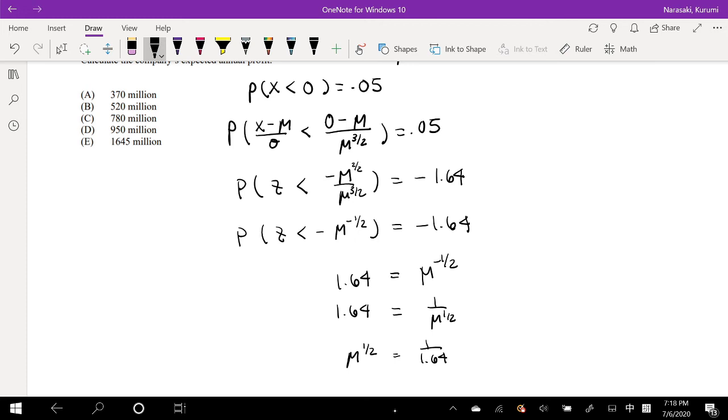And how do we undo a square root? We square it. So mean is equal to 1 over 1.64, and this thing, 1.64 squared, which is equal to 0.371.